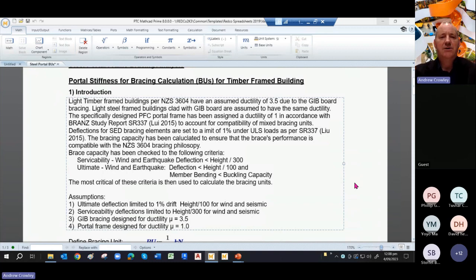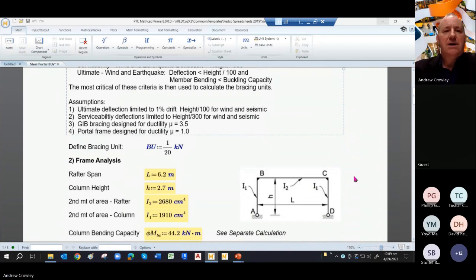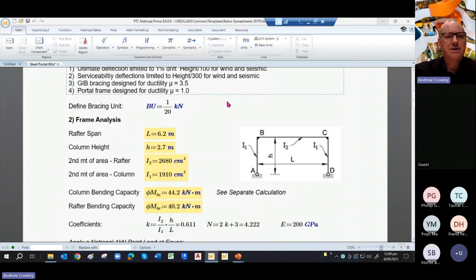So the design philosophy is based on the following assumptions. You have an ultimate deflection of your frame, and it's limited to 1% of the storey height. So height over 100 for wind and seismic at ultimate limit state. You then limit the serviceability limit state deflections to height over 300. There we have our mu factors of three and a half and one for jibboard and the portal frame, respectively.